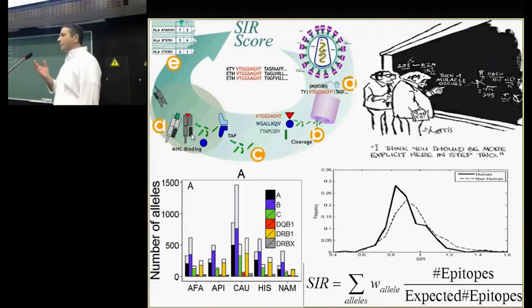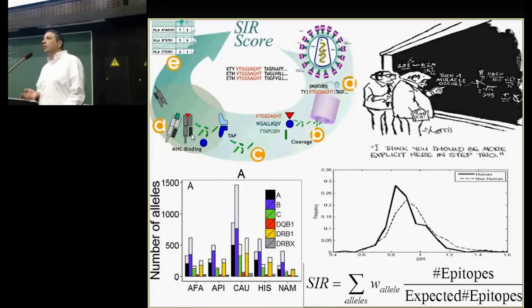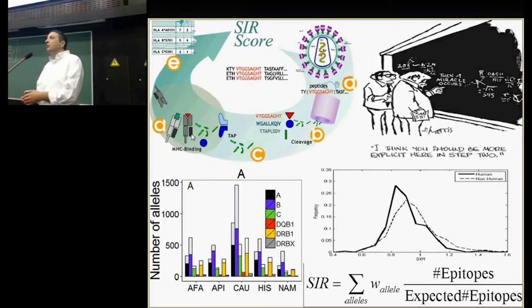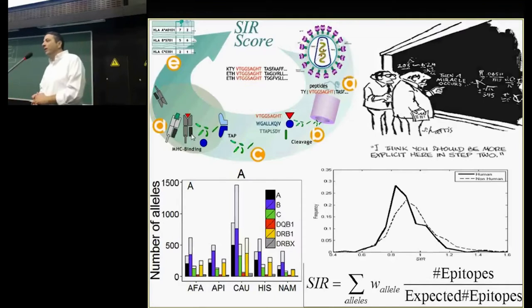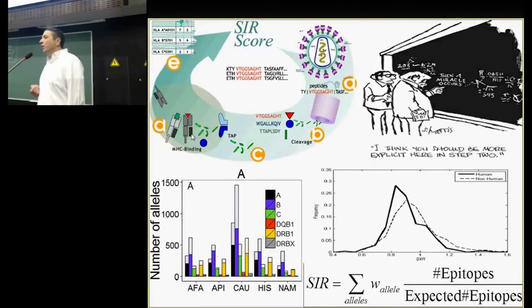The tool we're going to use is a score we've been using for the last 7-8 years, which we call the SIR score. This score represents basically the ratio between the number of epitopes you observe in a given protein and the number of epitopes you would expect to observe, assuming that the protein would behave randomly. What's random? We could define it in two ways: either scrambling the order of the amino acids in the protein, or producing a random protein from the amino acid composition of a given organism.